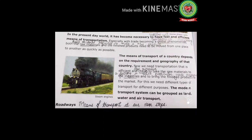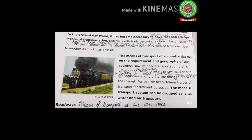Let us read the next paragraph. In the present-day world, it has become necessary to have fast and efficient means of transportation, especially with trade becoming a global phenomenon. Both the raw materials and finished products need to be moved from one place to another as quickly as possible. Mark the important meanings: necessary means important; efficient means working well; global phenomenon means universal happening.